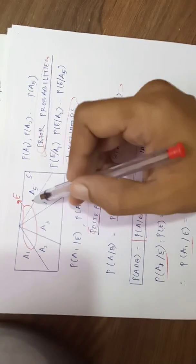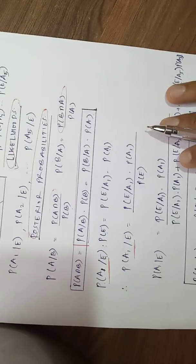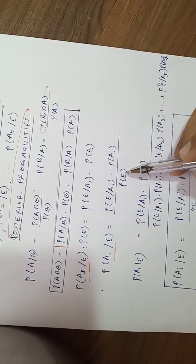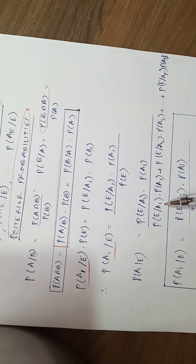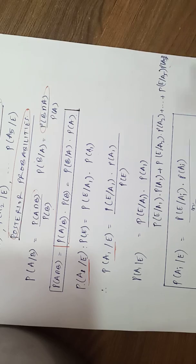Now here we will apply total probability theorem for probability of e. This event e's occurrence probability - if you apply total probability theorem, we can write this in conditional terms breaking it down: e given a1 into probability of a1, e given a2 into probability of a2, up till a5.